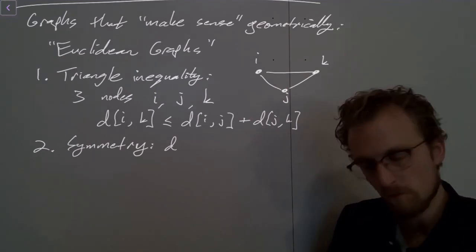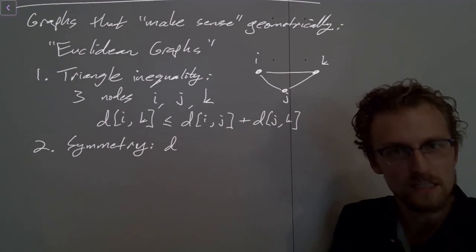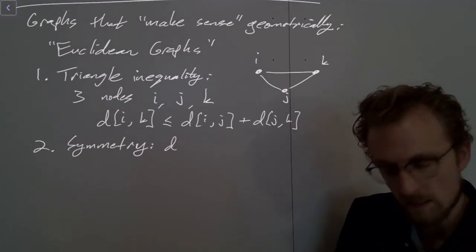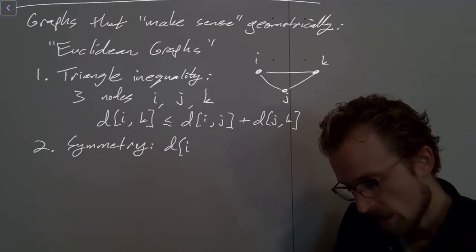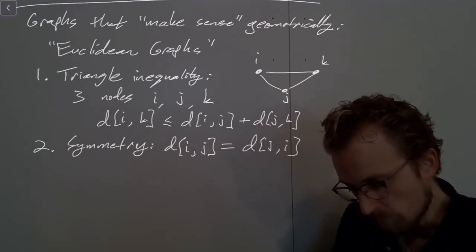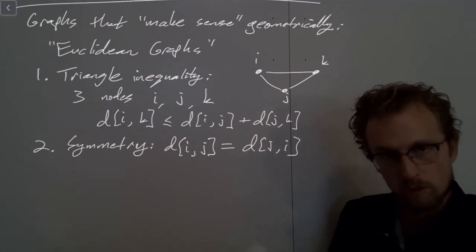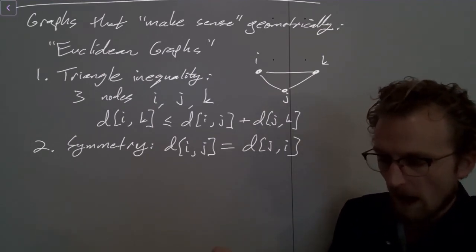it's a nice approximation for the real world. And if we're thinking that these edge weights correspond to physical distances, then of course this one makes perfect sense. So we're saying dij, the distance from i to j, equals the distance from j to i. So if these two conditions are satisfied on a graph, then we call that a Euclidean graph.